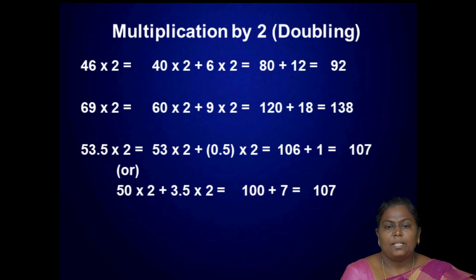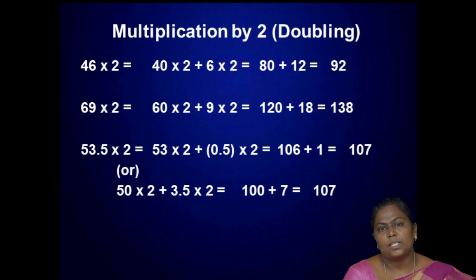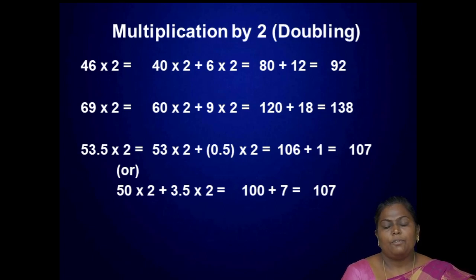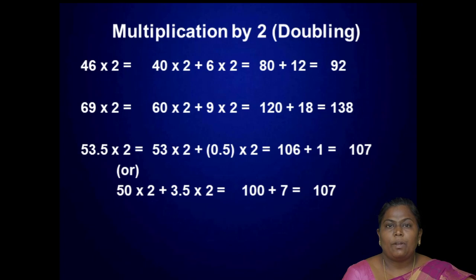For a decimal number, take 53.5 into 2. 53.5 can be expanded into 53 plus 0.5, so 53 into 2 plus 0.5 into 2 which is equal to 106 plus 1, that is 107. Similarly, 53.5 can be split as 50 plus 3.5, that is 50 into 2 plus 3.5 into 2, that is 100 plus 7 equal to 107. So 53.5 can be split in two ways: 53 plus 0.5, or 50 plus 3.5.